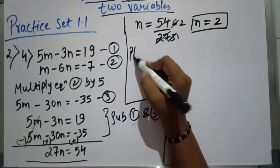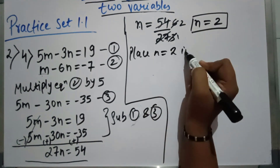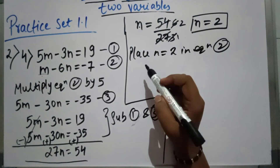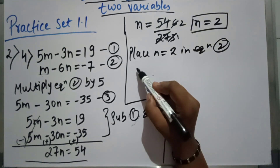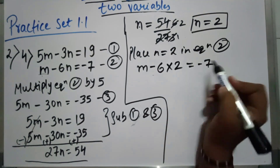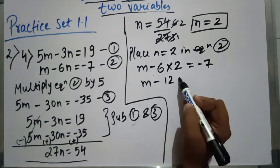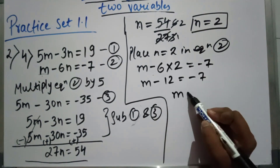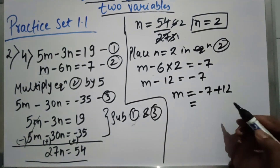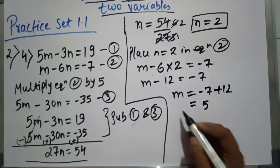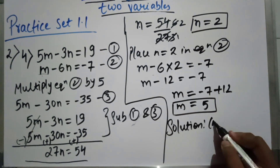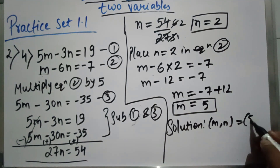Now place n equal to 2 in equation 2: m minus 6 into 2 equal to minus 7, so m minus 12 equal to minus 7, so m equal to minus 7 plus 12, which equals 5. So the solution is: m, n equal to 5, 2.